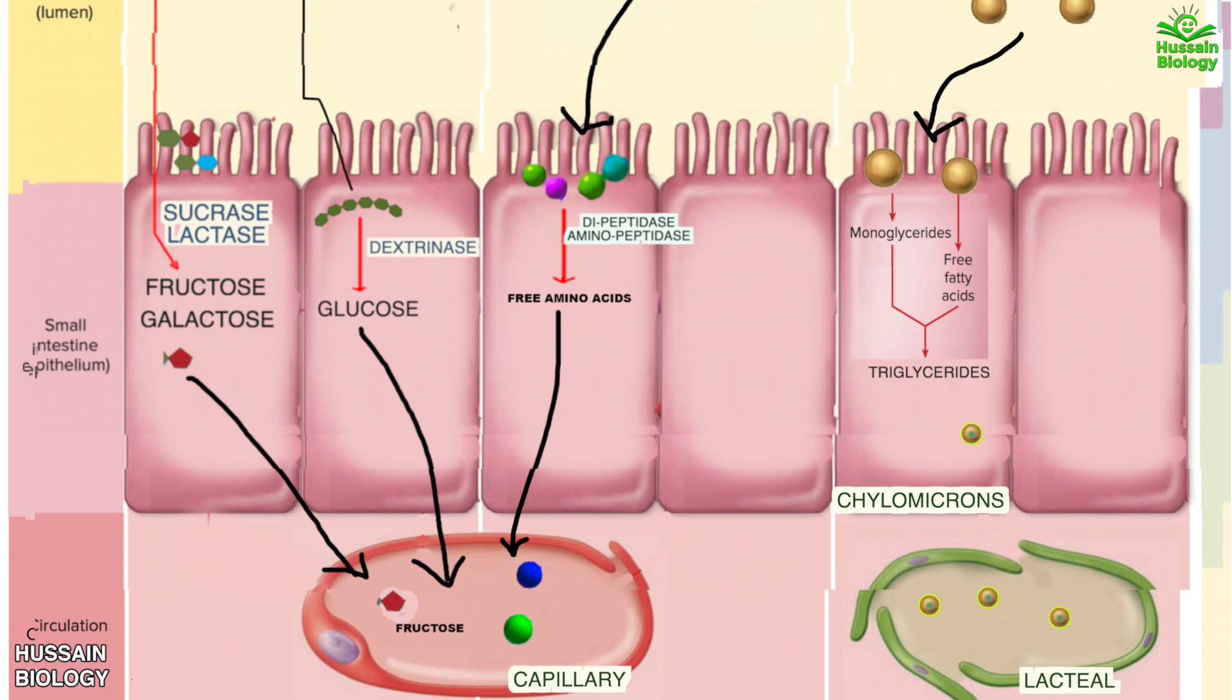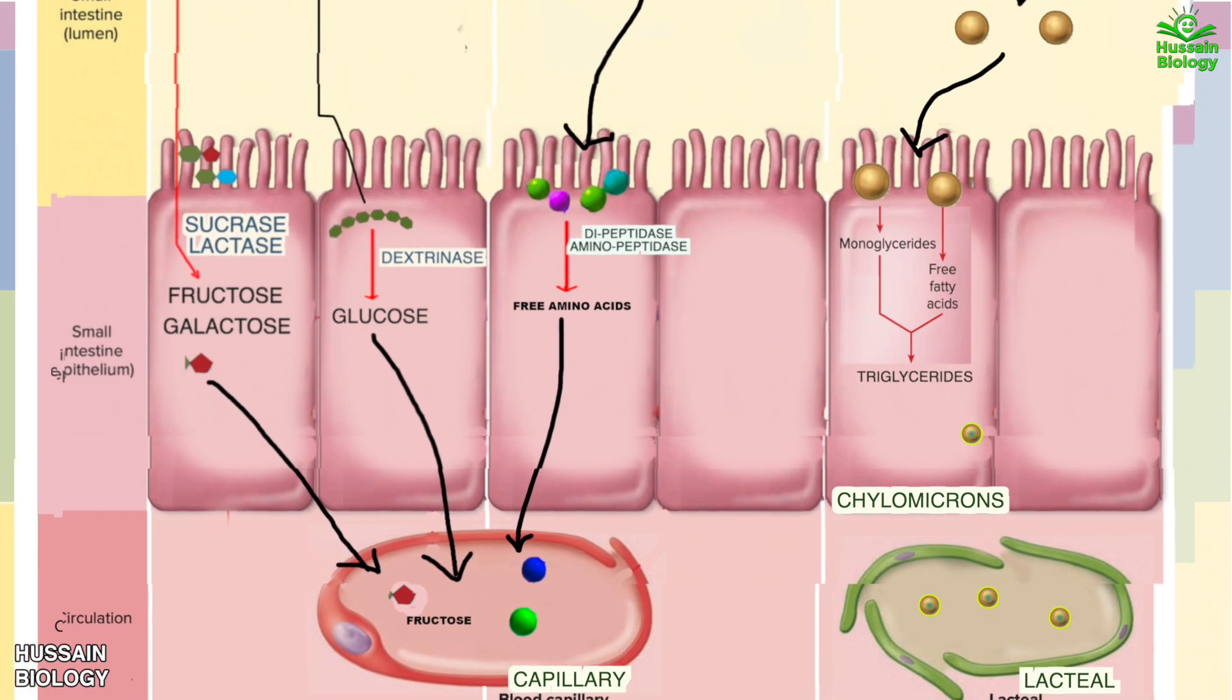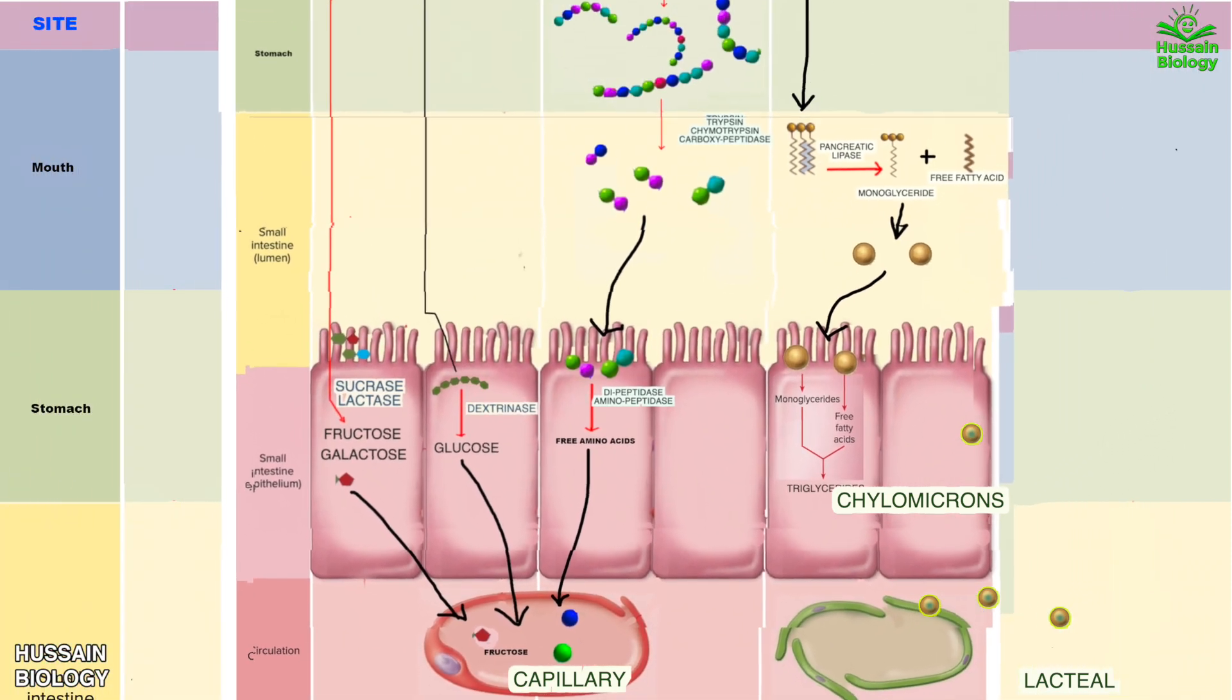Furthermore when we have cholesterol, phospholipids and fat soluble vitamins in the food they are directly converted into micelles in the small intestine which enters the epithelium of small intestine and gets converted into chylomicrons and then they follow the same path into lacteals.